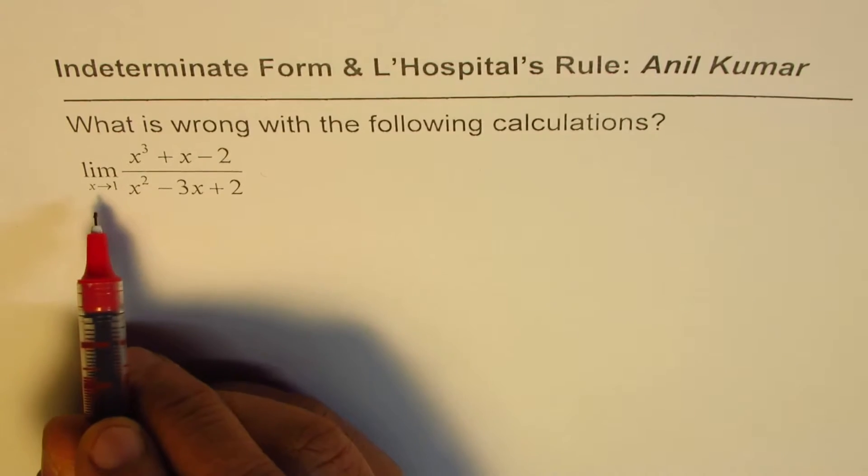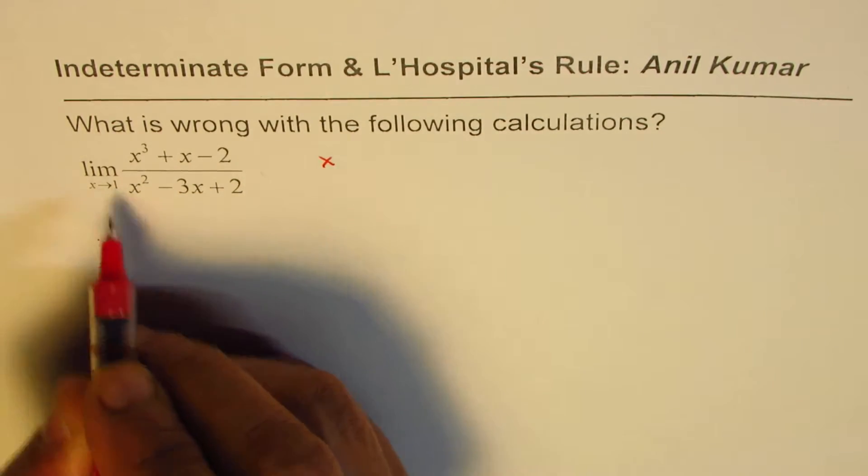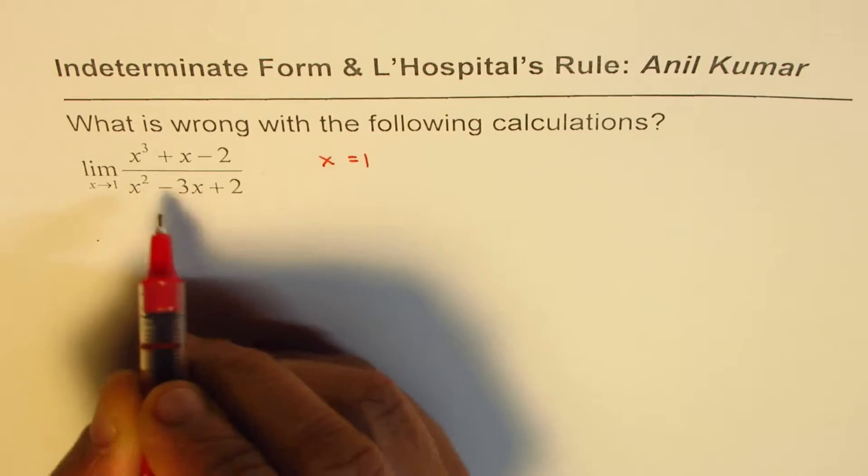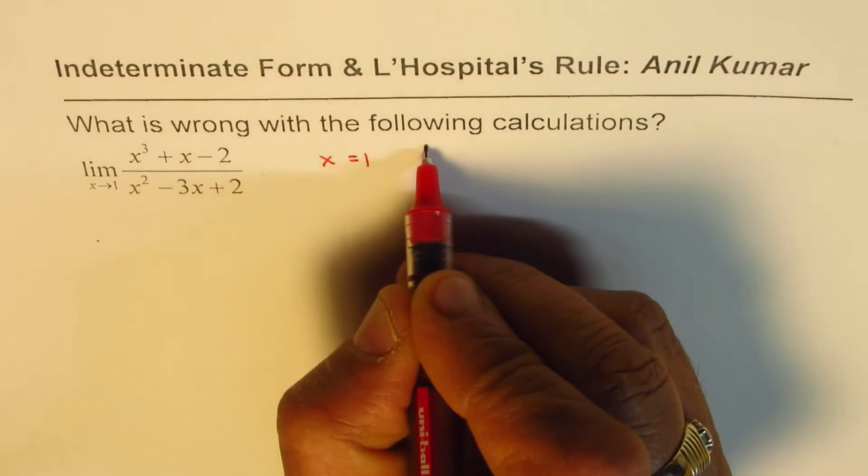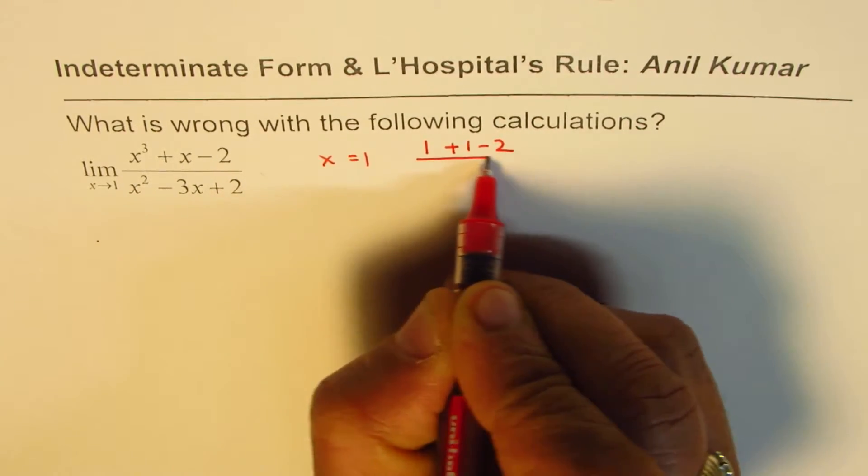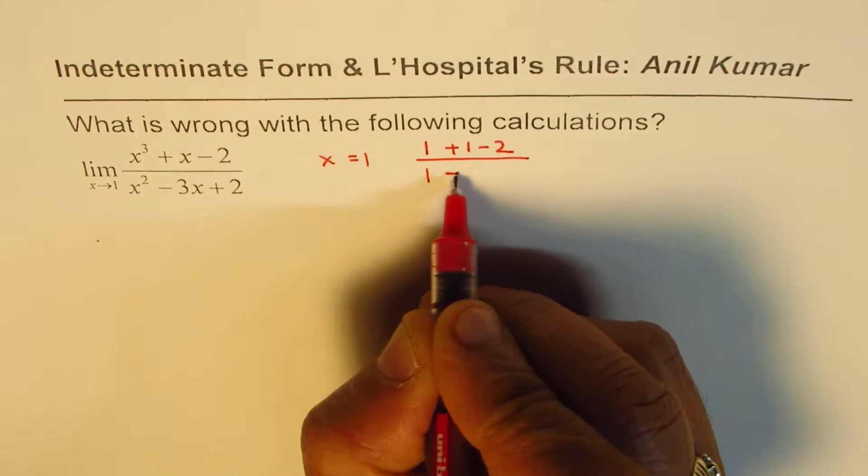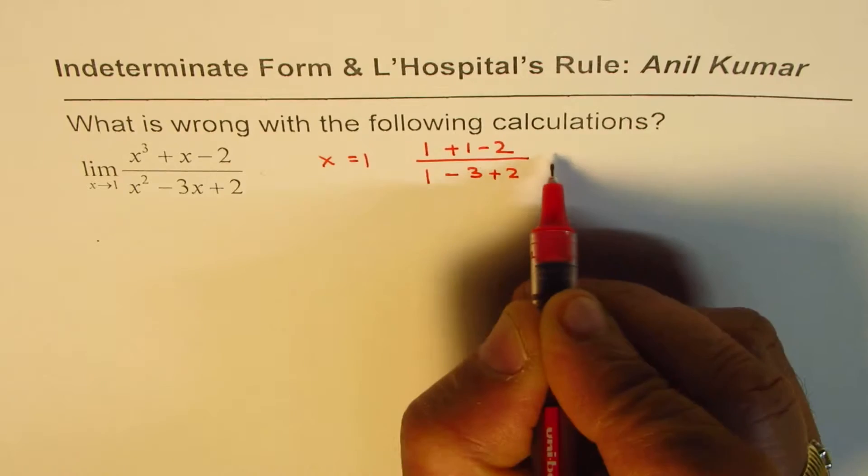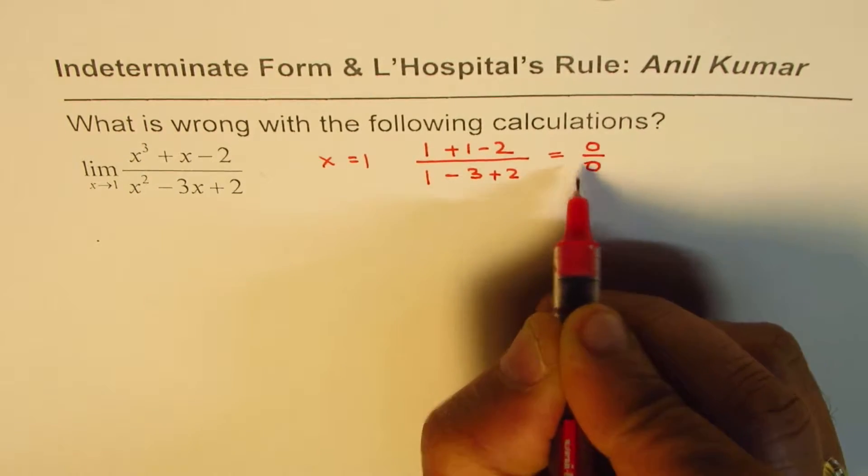We can do this by substituting the value of x. When x approaches 1, I'll substitute 1 in both numerator and denominator. If I substitute 1, I get 1³ is 1 plus 1 minus 2 in the numerator. Denominator will be 1² is 1 minus 3 plus 2, and we indeed get 0 over 0.